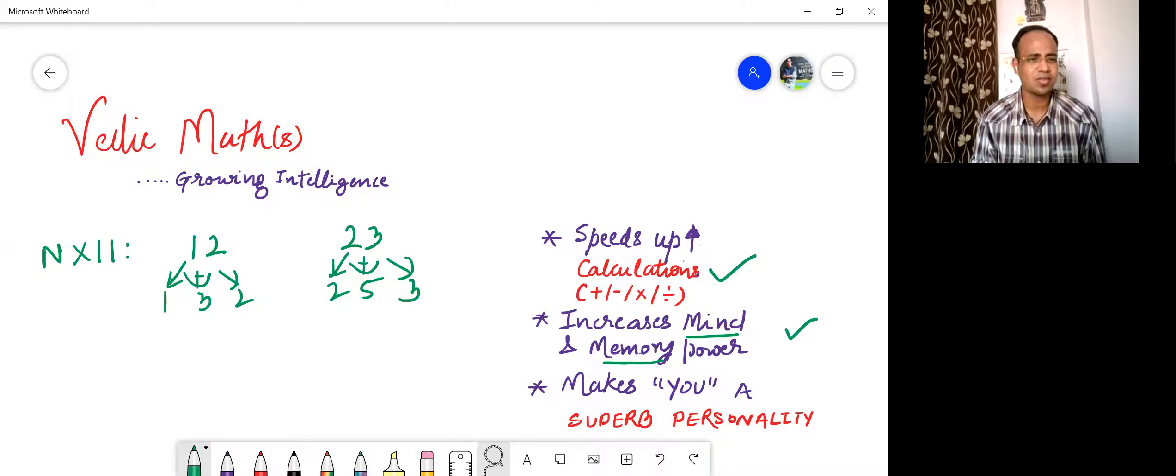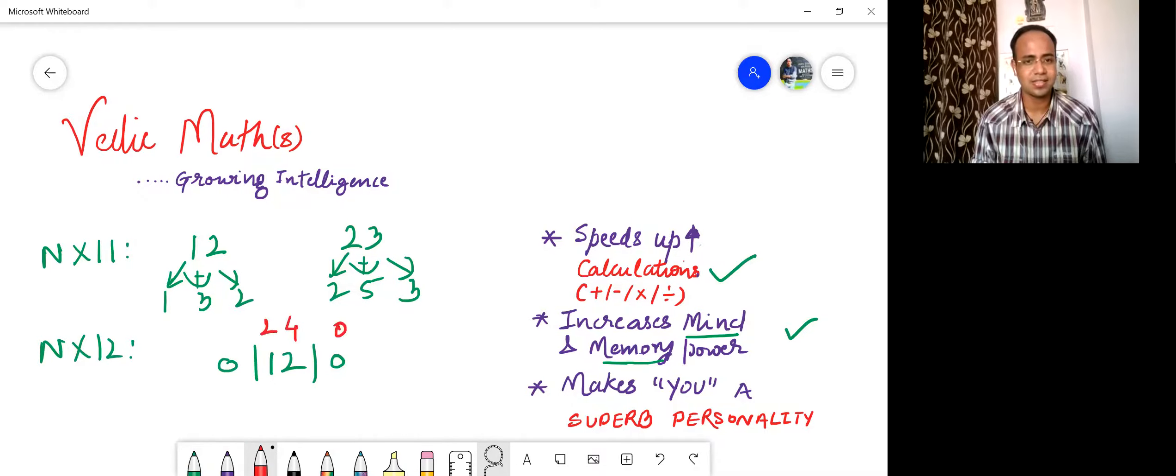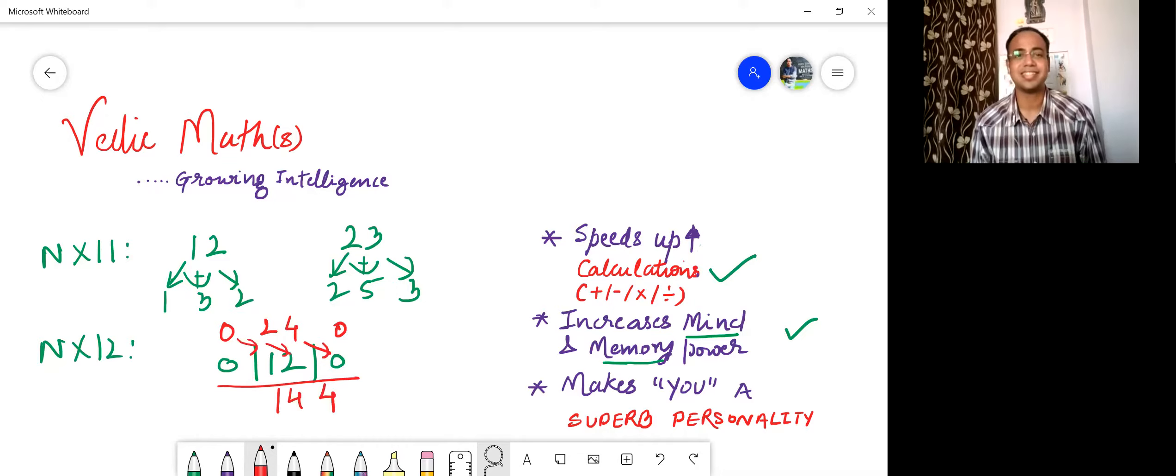And any number by 12, I put 12 over here, two lines over here, zero zero. I double all the numbers: zero, this is two, double is four, this is two, and again this is zero. And I add them diagonally, so the answer is 144. So let's work out Vedic maths together and grow in intelligence.